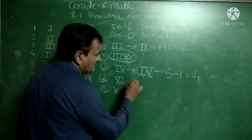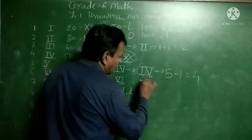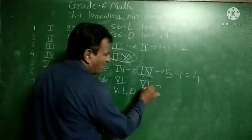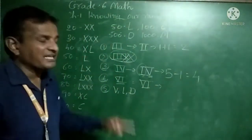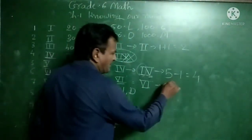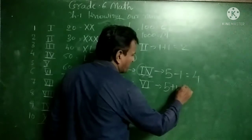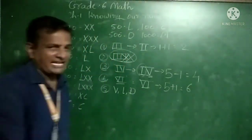For 6: when a smaller symbol is written on the right-hand side of a greater symbol, the symbol is added. So V plus I equals 5 plus 1, and we write VI for 6.